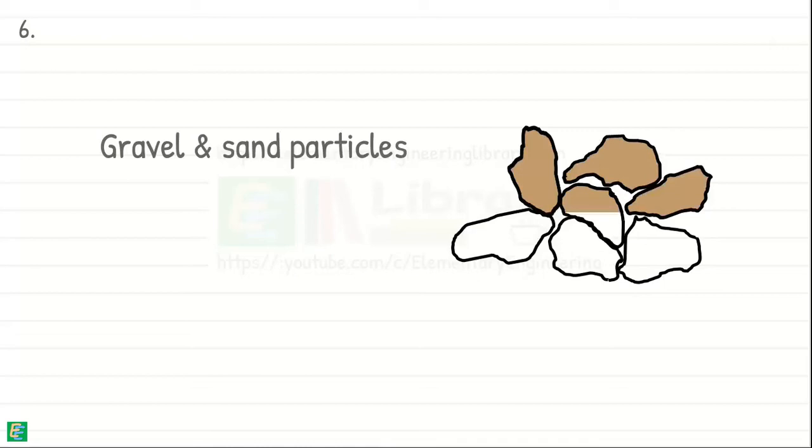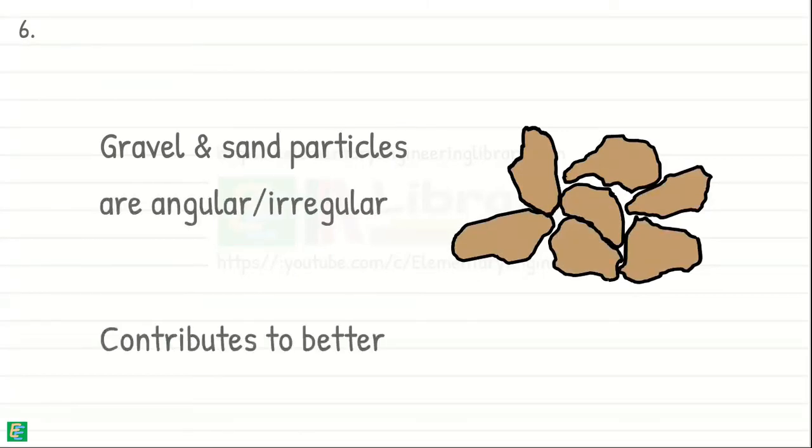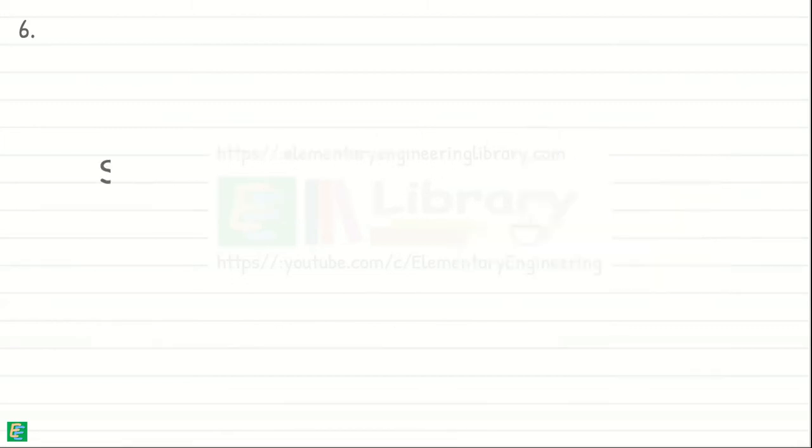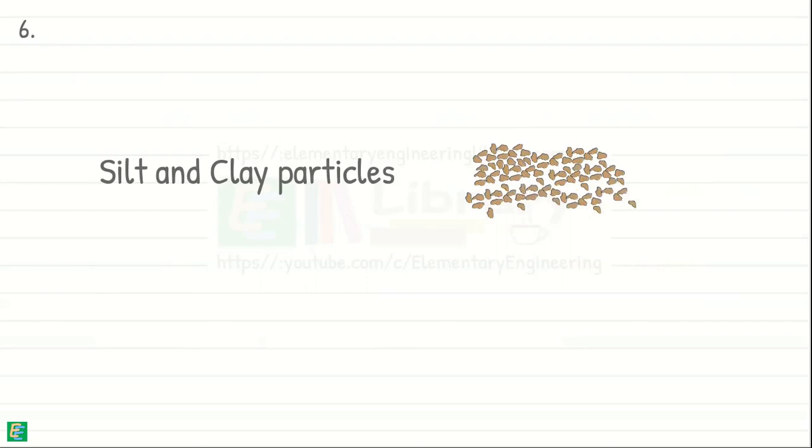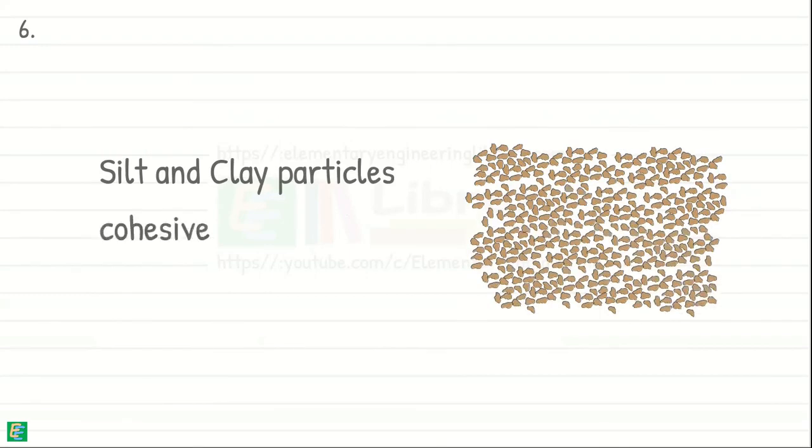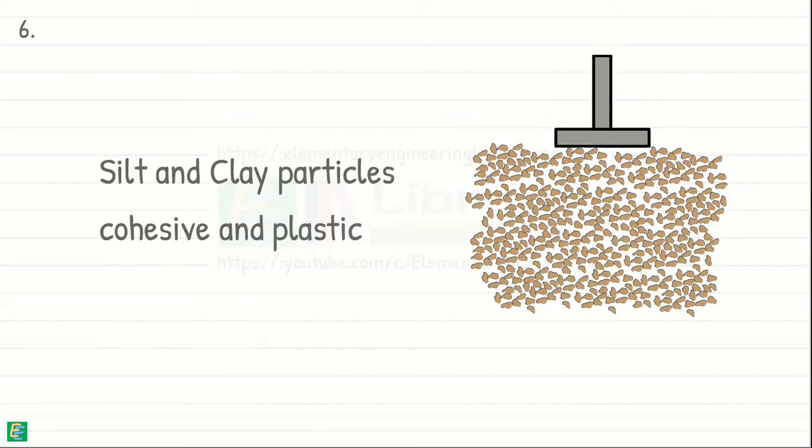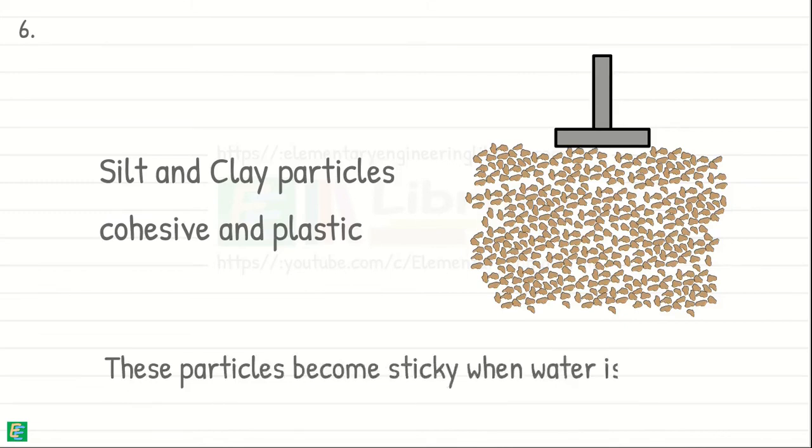Because gravel and sand particles are generally angular, irregular in shape, which contributes to better particle interlocking during compaction. Also, silts and clays which are finer particles are more cohesive and plastic. This cohesion makes it more difficult for the particles to move and rearrange during compaction. Also, these finer particles become sticky when mixed with water, which hinders particle movement during compaction.